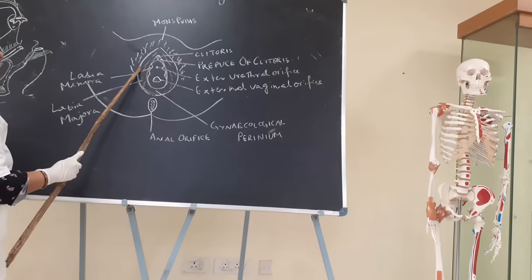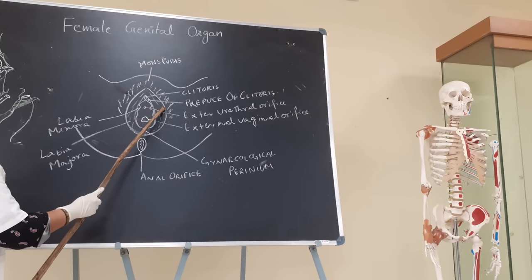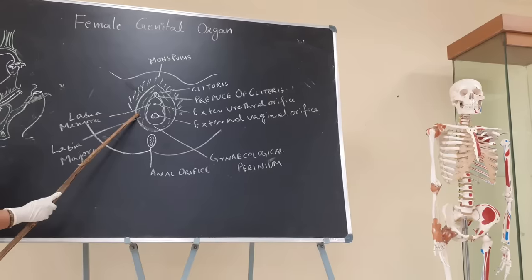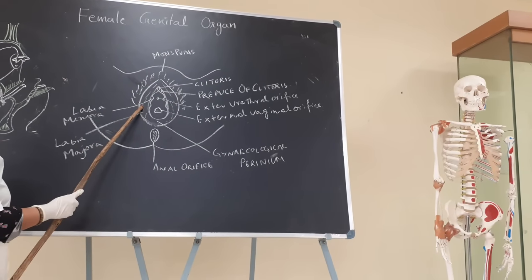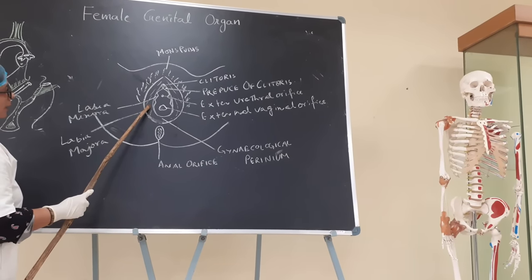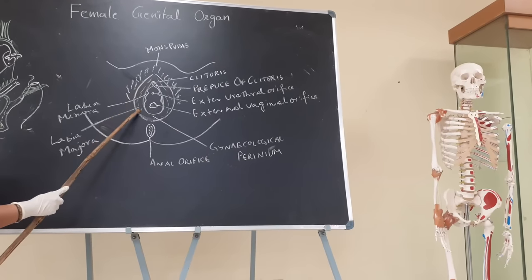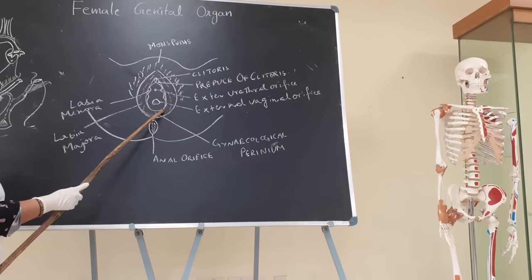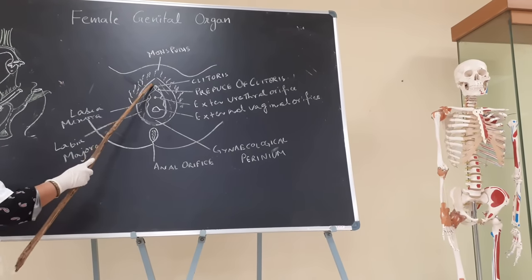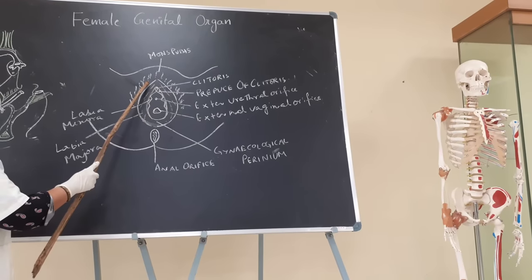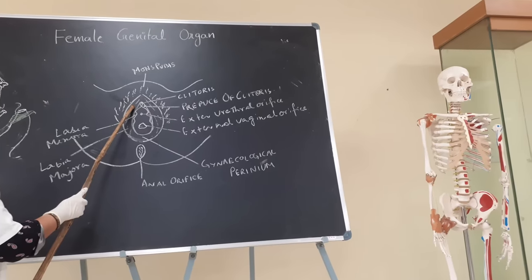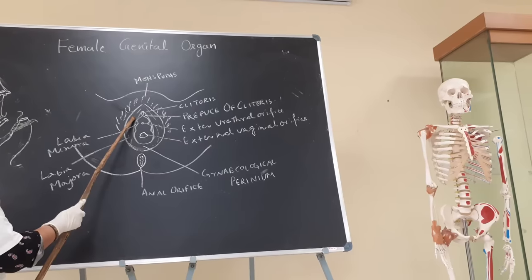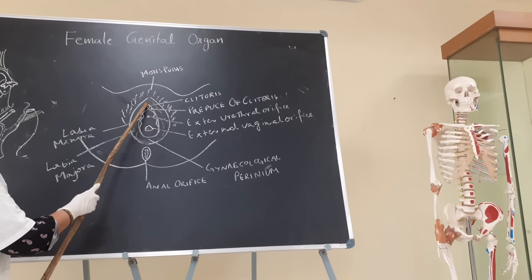The labia majora is a thick skin fold. Below it lies subcutaneous fat, sebaceous glands, apocrine glands, and sweat glands. It is dark in pigmentation, but on the medial aspect, it is more or less pink in color. In the upper part of the labia majora, the distal part of the round ligament of the uterus lies and merges with the subcutaneous fat.